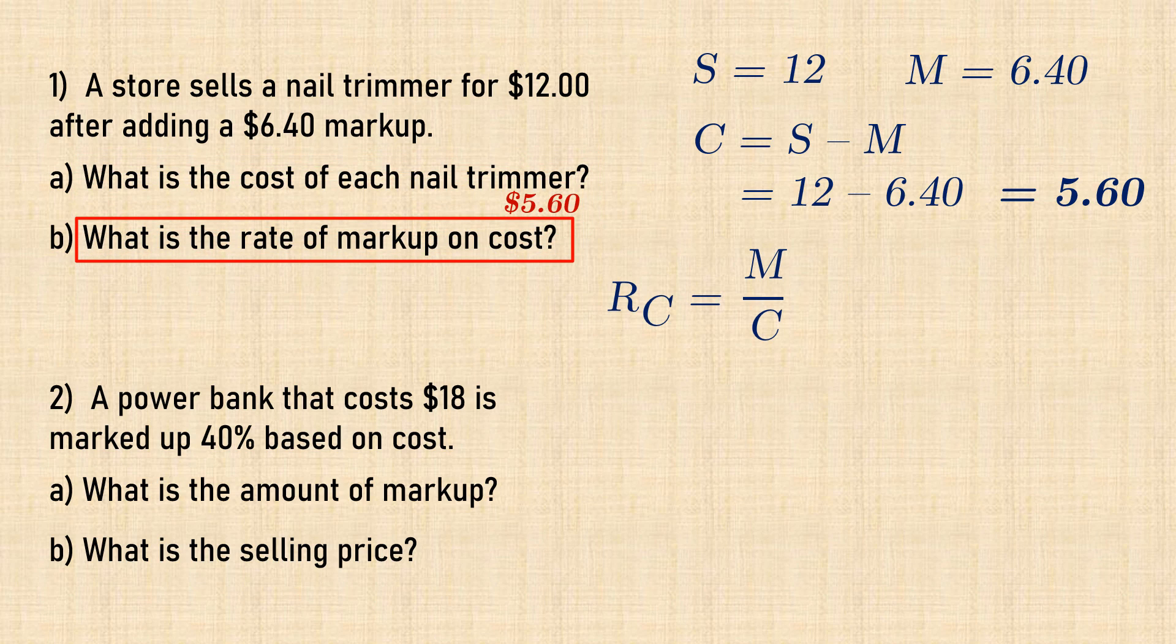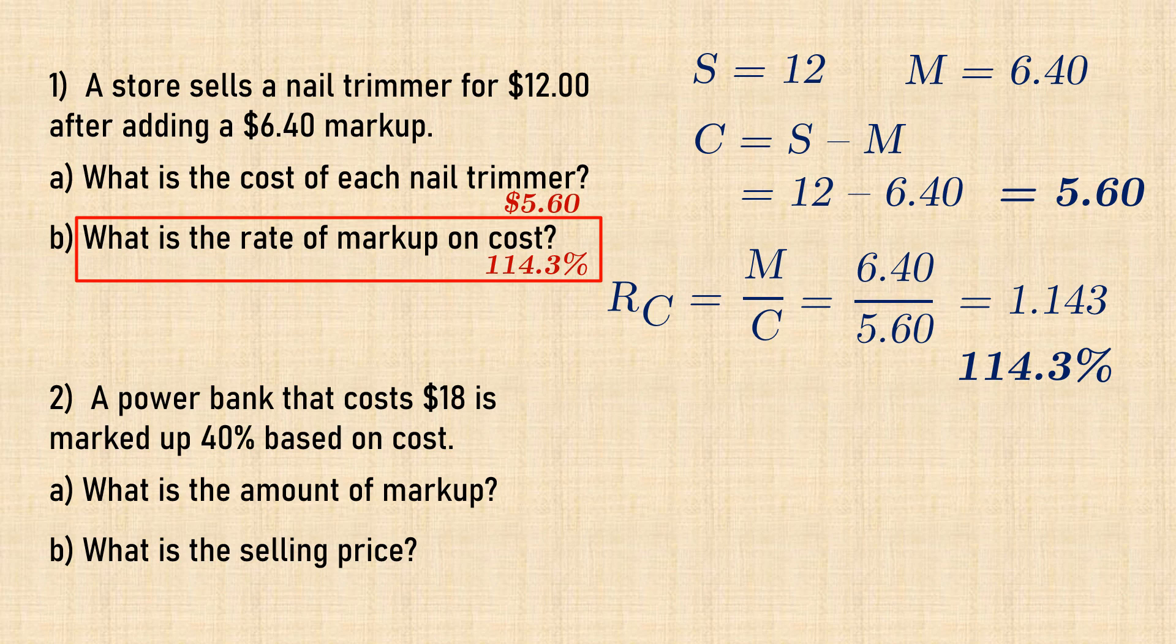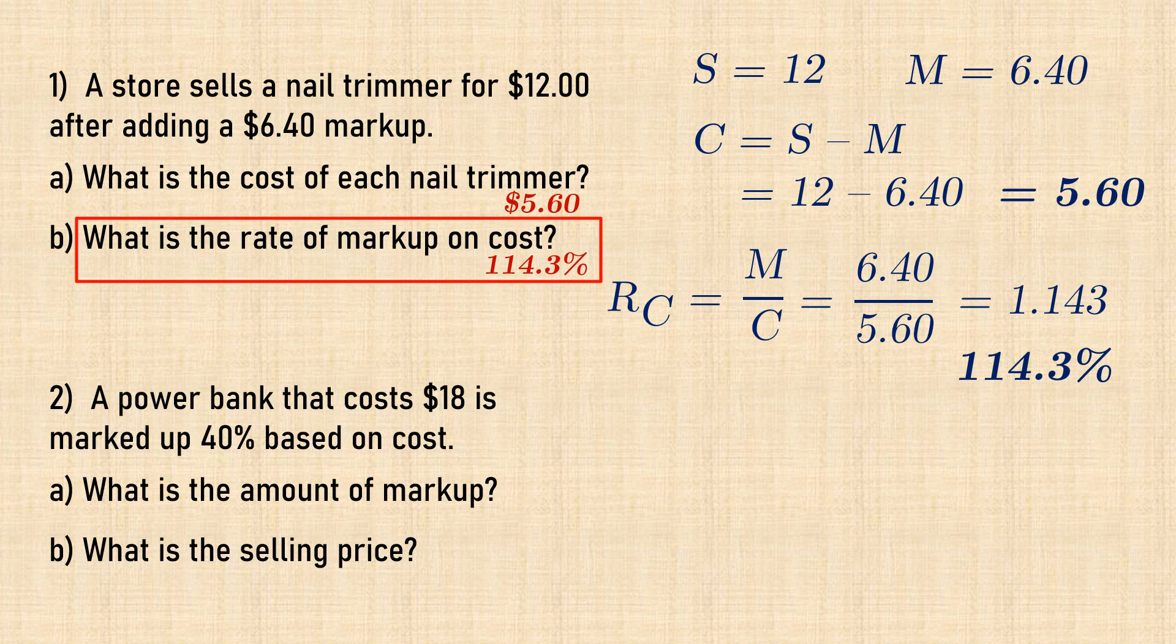The rate of markup based on cost is therefore 6.4 divided by 5.6, and that would give 1.143, which when multiplied by 100% gives 114.3%.